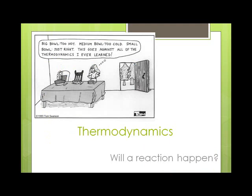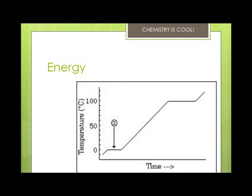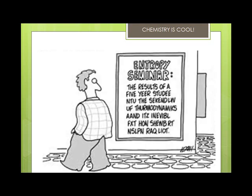We have to go back to thermodynamics to find out whether a reaction will happen. Substances tend to react to achieve the lowest energy state, so most chemical reactions are exothermic. This doesn't work for things like ice melting, because an ice cube must absorb heat to melt, but it melts anyway. Entropy is the degree of randomness or disorder, designated as S in equations. The first law of thermodynamics states that the energy of the universe is constant. The second law states that the entropy of the universe increases with any change in energy state.